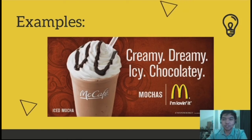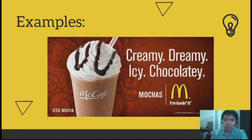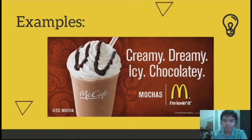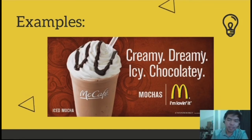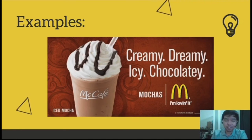Next is a picture example: McCafe — creamy, dreamy, icy, chocolatey. Sometimes words do not even make sense. Like, 'dreamy' — how can we relate that to a coffee or a mocha? Sometimes words do not entirely relate to the product they are offering, but it makes it catchy. That is how people in the marketing area use propaganda to sell their products. This is an example of what glittering generalities looks like.